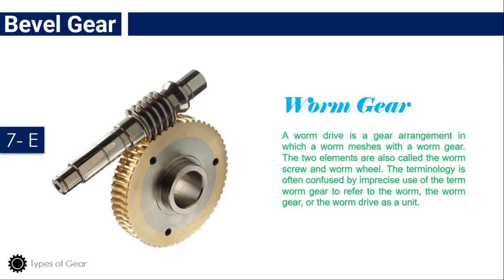Worm gear: A worm drive is a gear arrangement in which a worm meshes with a worm gear. The two elements are also called the worm screw and worm wheel. The terminology is often confused by imprecise use of the term worm gear to refer to the worm, the worm gear, or the worm drive as a unit.